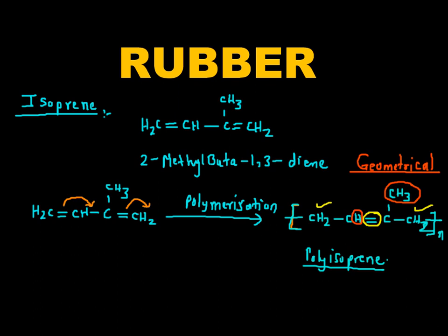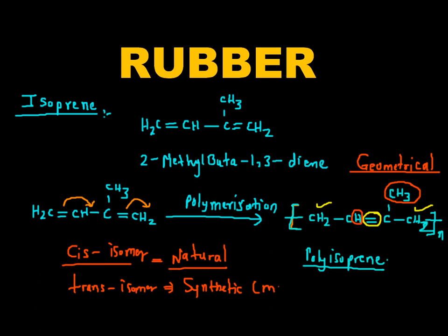So the cis polyisoprene, the cis isomer is a natural rubber, whereas the trans isomer, the trans isomer is synthetic, that is manmade.